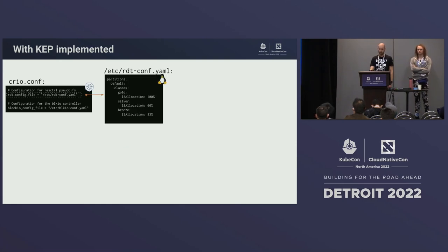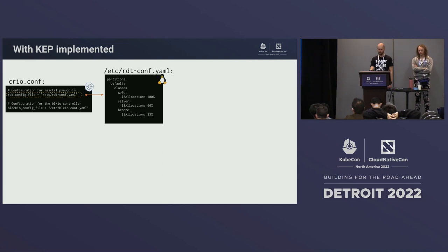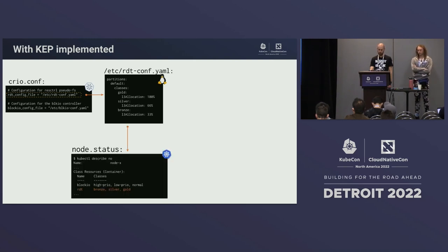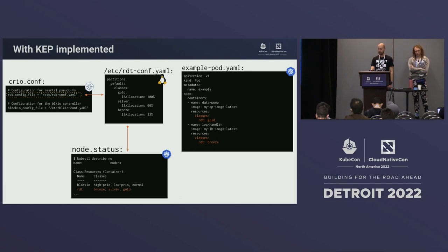With the KEP fully implemented, the user interface and experience will be much better than the current runtime-only approach. Everything starts similarly from the runtime configuration — for example, cache management with RDT resctrl, configured with three classes. But with runtime and Kubelet support, we're able to update node status to show what's available, the pod spec looks much cleaner, and we can do proper input validation of the fields.